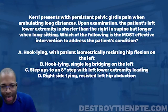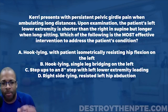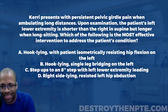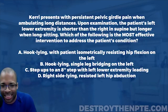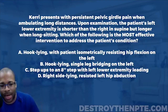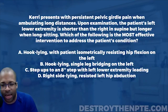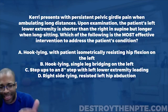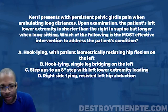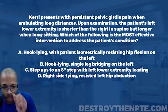We have answer choice A: hook lying with patient isometrically resisting hip flexion on the left. B: hook lying, single leg bridging on the left. C: step ups to an eight inch step with the left lower extremity leading. And D: right side lying, resisted left hip abduction.